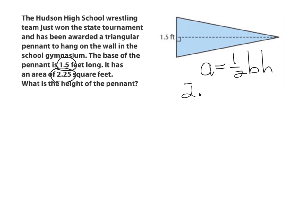2.25 equals one half times the base, which is 1.5 times the height. So I've got to solve for H. I've got to get everything, all the numbers on the left side of the equation and the letter on the right side. So let's just go ahead and do that. So first thing I want to do is combine all my like terms on this side of the equation. So I have one half and I have 1.5. Those are my numbers. So I combine, I multiply. One half times 1.5.